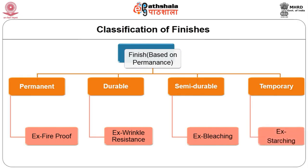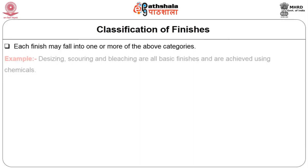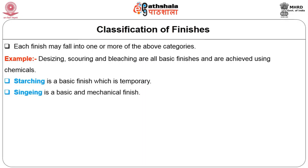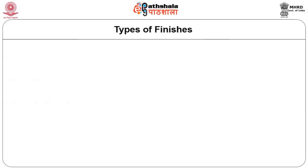Temporary finishes are not durable and are removed or diminished after the first laundering or dry cleaning; most can be reapplied at home — examples are starching and glazing of white fabrics. Each finish may fall into one or more categories: desizing, scouring and bleaching are basic finishes achieved using chemicals; starching is a basic temporary finish; singeing is a basic mechanical finish; mercerization and plissé are special finishes applied using chemicals and are permanent.